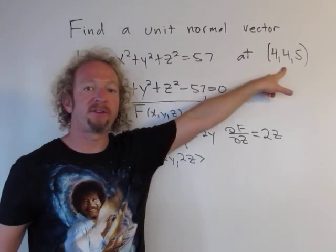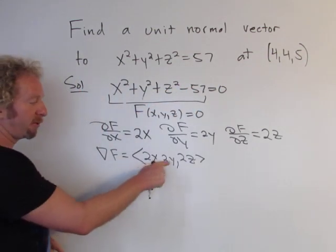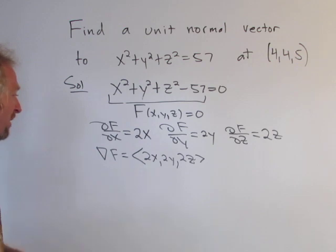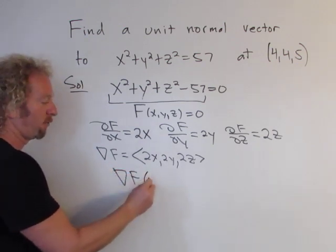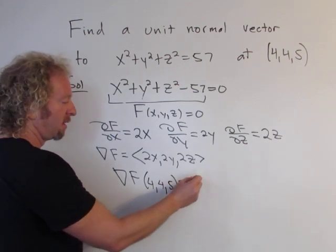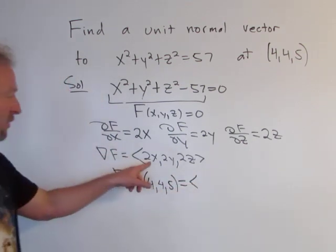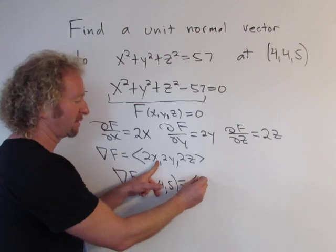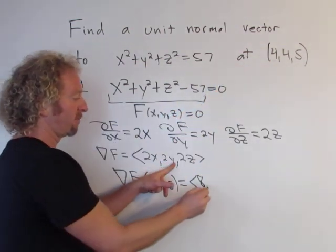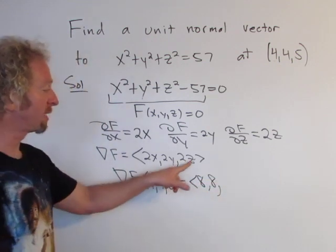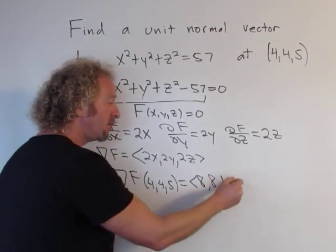Now we need to find out the vector that is normal to this curve at (4,4,5). So all we do is we plug in (4,4,5) respectively for x, y, and z. So the gradient of big F at (4,4,5) is going to be—let's see, so 2 times 4 is 8, x is 4, and then 2 times 4 that's 8, and then 2 times 5 so 10.